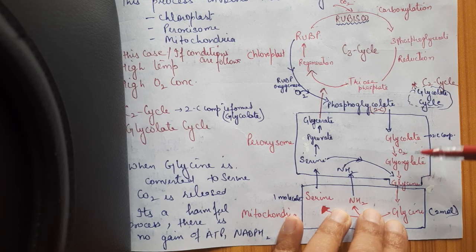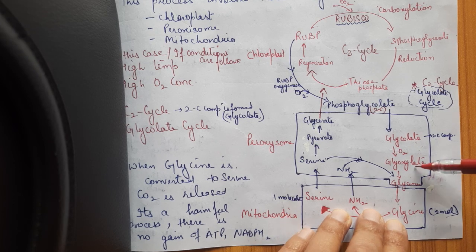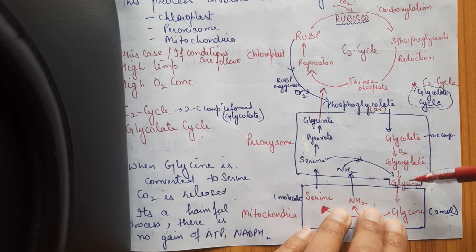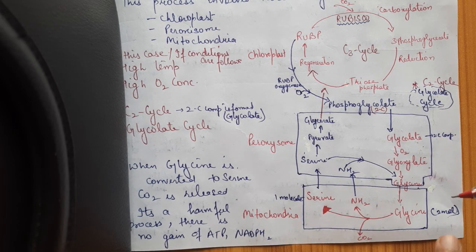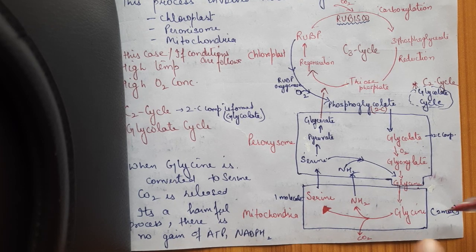In the peroxisome: glycolate, with oxygen added, is converted to glyoxylate. Glyoxylate is further converted to glycine. Glycine then enters the third organelle, the mitochondria, where 2 molecules of glycine are processed and carbon dioxide is released.